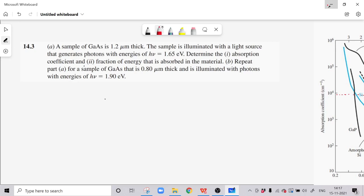The sample is illuminated with a light source that generates photons with energies of 1.65 electron volts. We have to determine the absorption coefficient alpha and the fraction of energy that is absorbed in the material. We have to repeat the problem for a sample of gallium arsenide that is 0.80 micrometer thick and which is illuminated with photons of 1.90 electron volts.